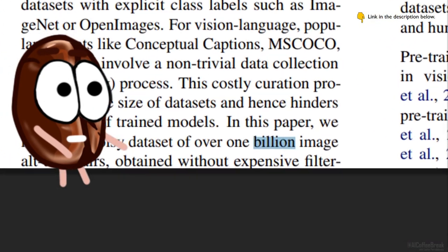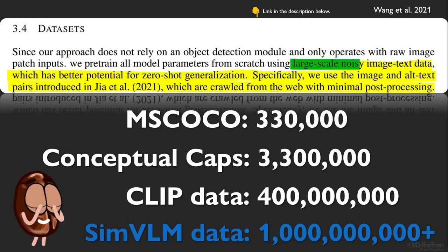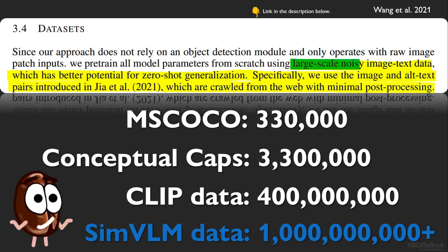Ms. Coffee Bean tells me to look for the actual amount of data in this mysterious dataset. We're speaking about over 1 billion image-text pairs? But the word 'billion' — or any number indicating the amount of data samples — is not anywhere in the SimVLM paper. I had to check another paper for this. 'Large-scale' does not necessarily mean 1 billion; hundreds of millions were still considered large-scale the last I checked. If the amount of used data is not worth mentioning in the abstract, I don't know what is.